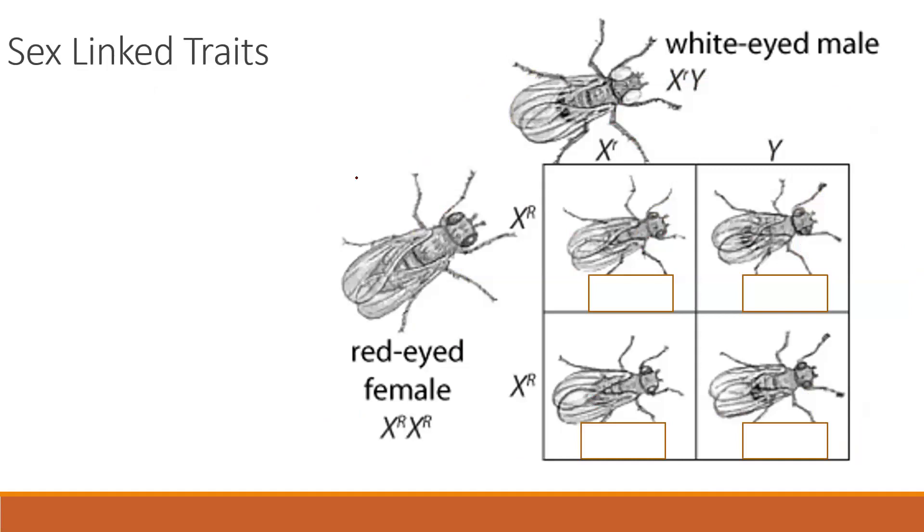Okay, so when we do the Punnett square of a white-eyed male with a red-eyed female, we now write X with the little r and big Y. So there we have it: there's the female red-eyed, red-eyed male.